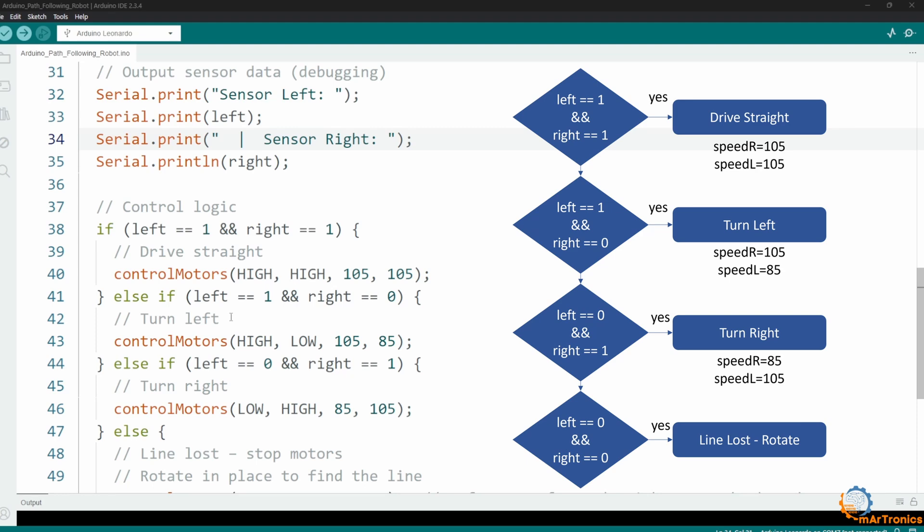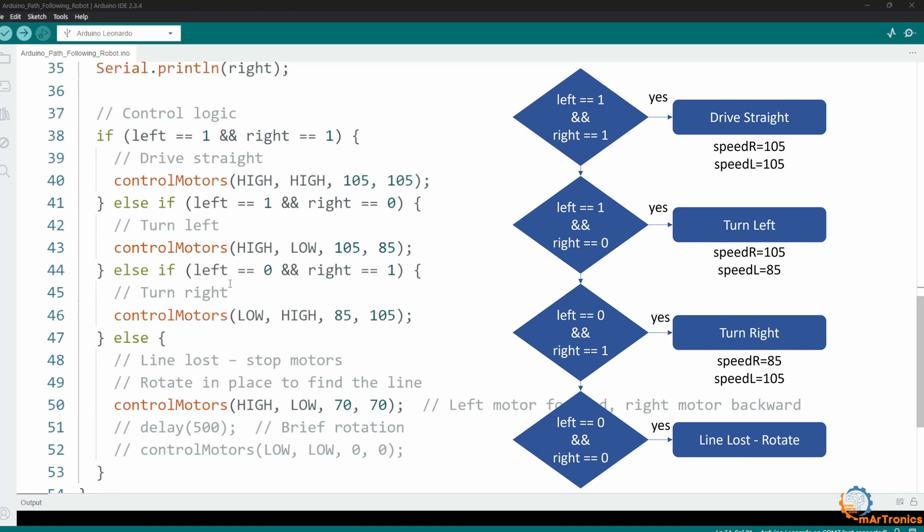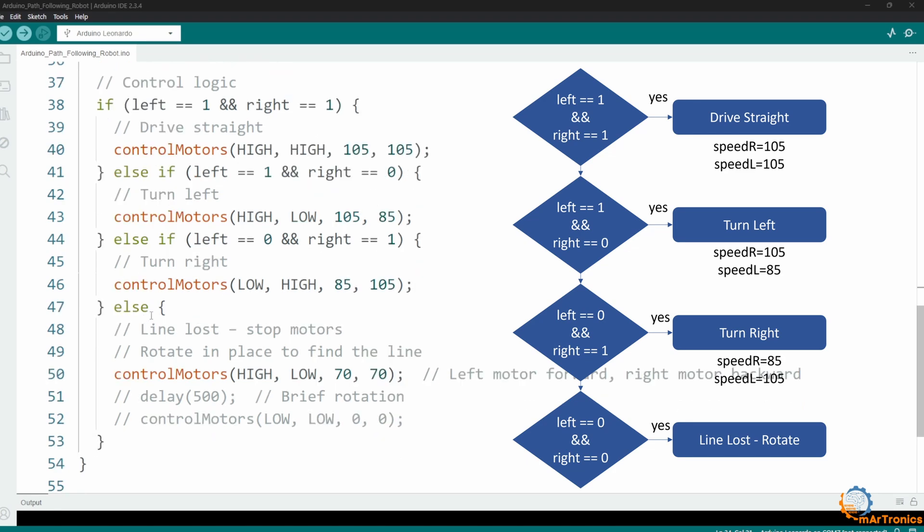However, if the left sensor is on the line, while the right sensor is not, then the robot turns left by calling this function that I defined. If the left sensor is not on the line, while the right sensor is on the line, the robot turns right by calling the motor turning function as follows. If both sensors are not on the line, which means both sensors read the value of 0, the robot keeps turning left until it finds the line again.